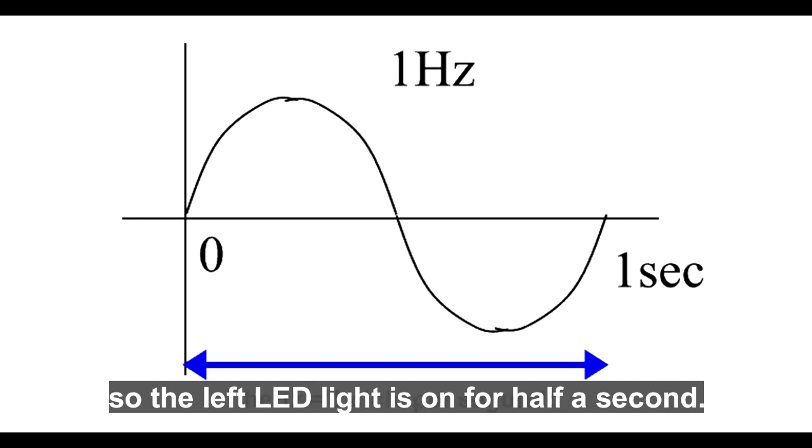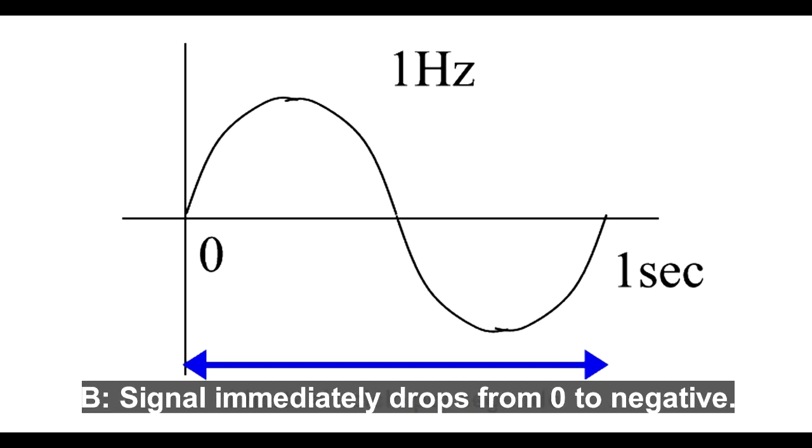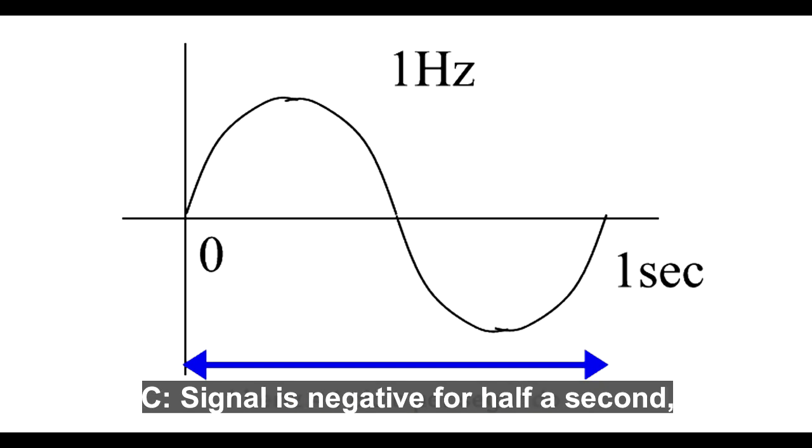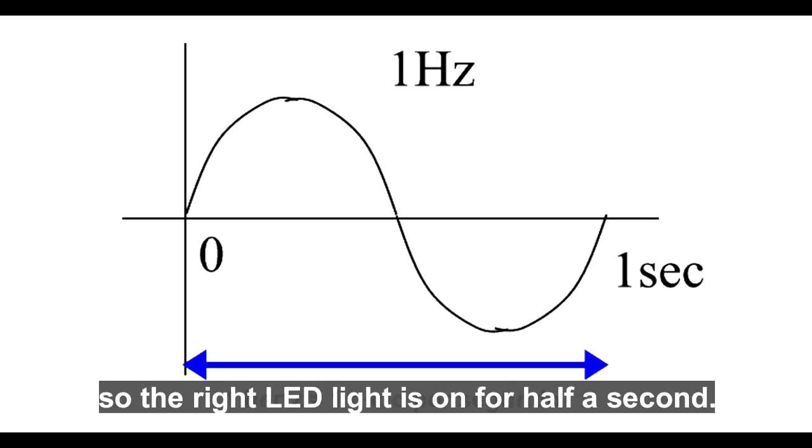The signal immediately drops from zero to negative. The signal is negative for half a second, so the right LED light is on for half a second.